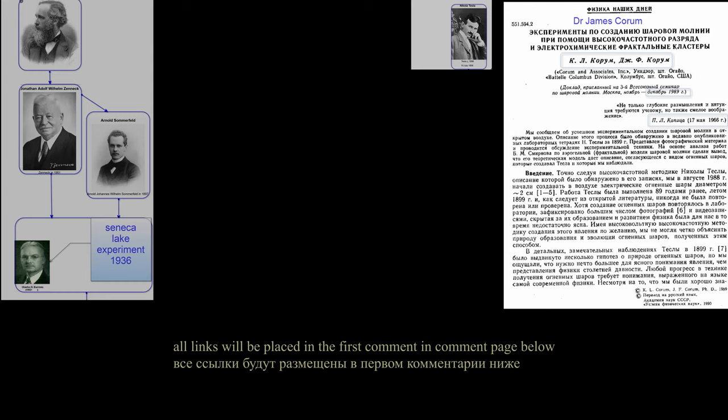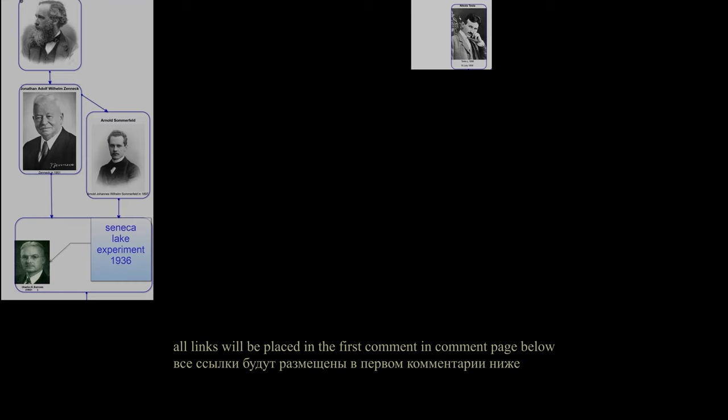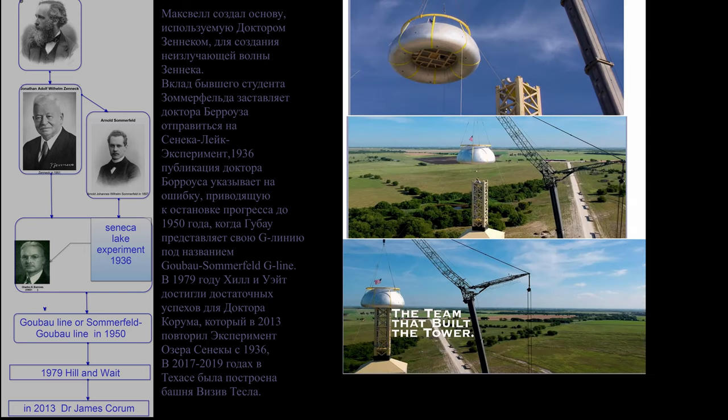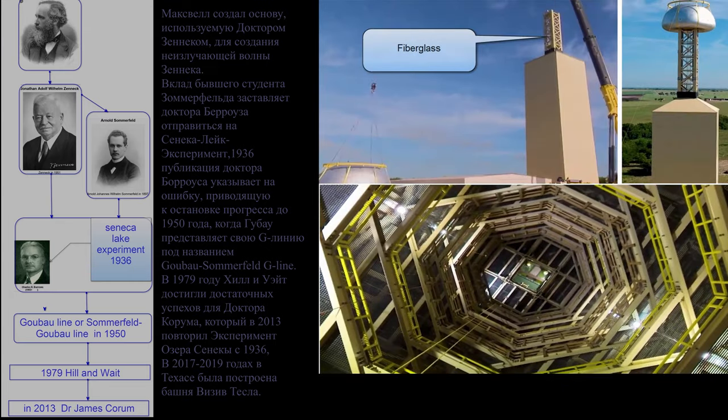Maxwell created foundation used by Dr. Zenneck to create non-radiating Zenneck wave. His former student, Sommerfeld, contribution made Dr. Burroughs go to Seneca Lake experiment. Resulting publication of Dr. Burroughs points at error causing stop of progress till 1950, where Goubaugh presents his G-line named Goubaugh-Sommerfeld G-line. In 1979 Hill and Wade made enough of progress for Dr. Corum, who in 2013 repeated Seneca Lake experiment from 1936. In 2017-2019 Viziv Tesla Tower was built in Texas.